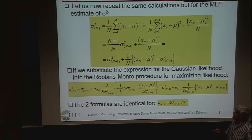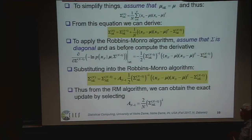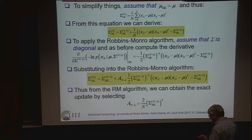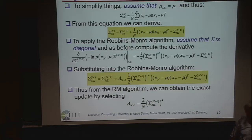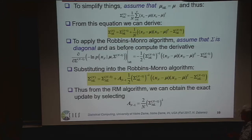The MLE estimate — you can do it for the variance as well; there is an exact equation, but you can use Robbins-Monroe. You can do this, of course, for the multivariate Gaussian. This analytical expression — I don't think you can do that for any distribution. For the Gaussian the mathematics work nicely, but if you give me another distribution, like Student's t, I doubt it works analytically. So you have to use the Robbins-Monroe algorithm for that.